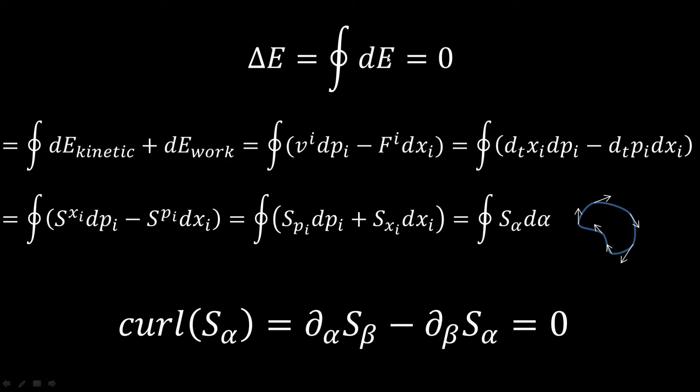The infinitesimal element of energy can be divided into kinetic and work. Since we said that the total energy is just the sum of each degree of freedom, here we just have the sum of all the degrees of freedom. So we have Vdp minus Fdx. This is the kinetic term and this is the amount of work done against the system. V is going to be dx dt and F is going to be dp dt.